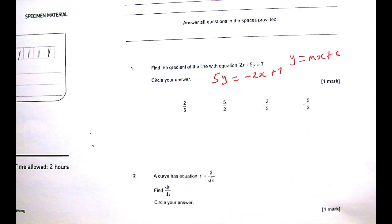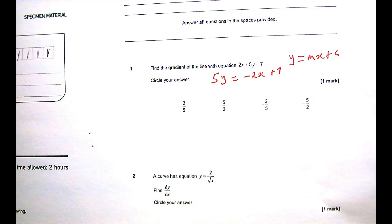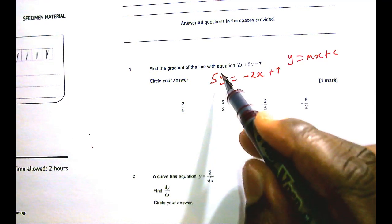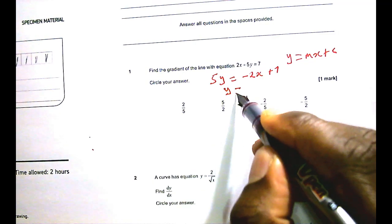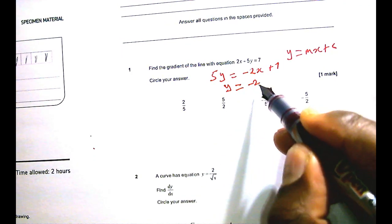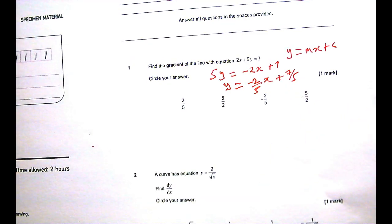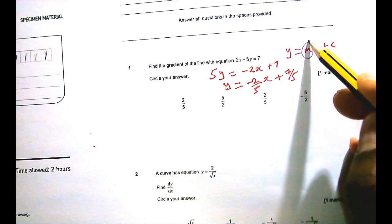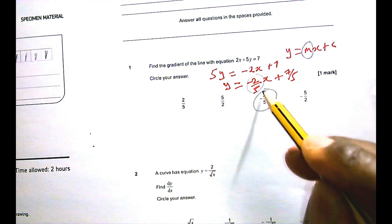Now that we have 2x on the other side, can we get rid of the 5 which is multiplying y? The opposite of multiplication is division, so I'm going to divide both sides by 5. That gives y equals negative 2 over 5 times x plus 7 over 5. The gradient is whatever you have in front of x, and as you can see, m is replaced by negative 2 over 5. And this is therefore my answer.